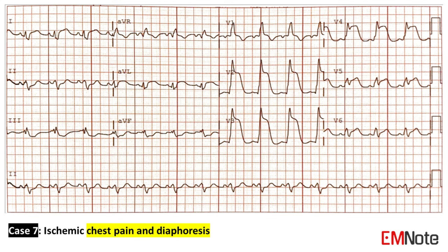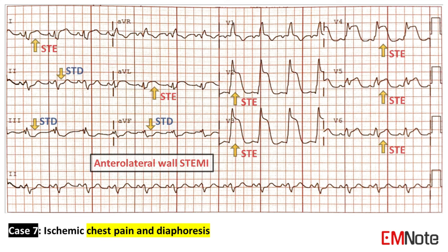Case 7: The patient presents with ischemic chest pain and diaphoresis. The ECG shows an anterolateral wall STEMI.